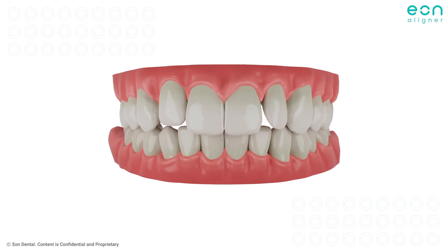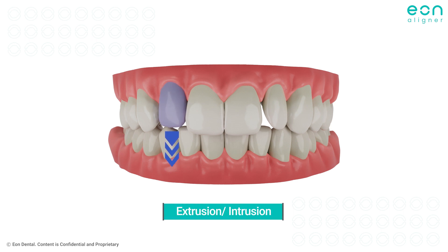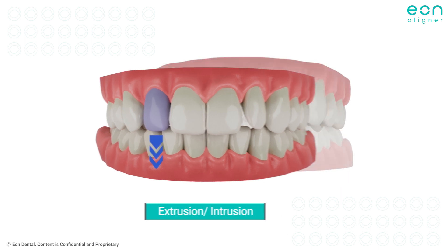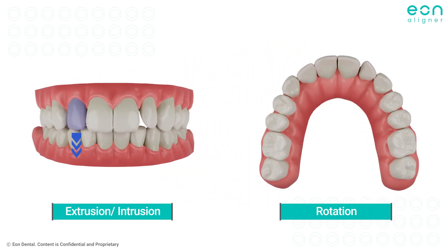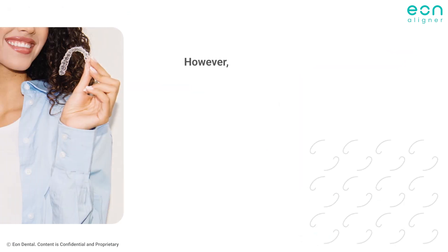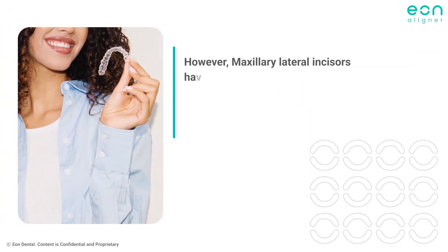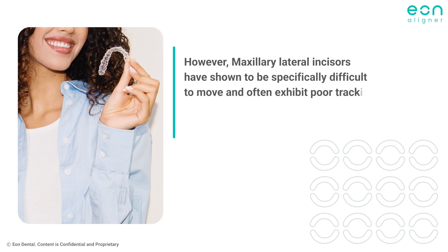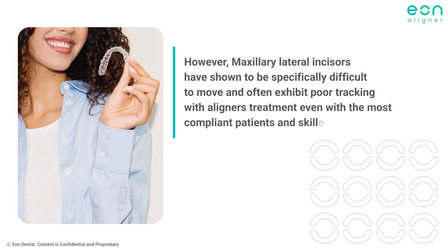During aligner treatment, different movements are usually planned for such teeth to achieve perfect alignment, including rotations, extrusion, and intrusion. However, maxillary lateral incisors have shown to be specifically difficult to move and often exhibit poor tracking with aligner treatment, even with the most compliant patients and skilled practitioners.